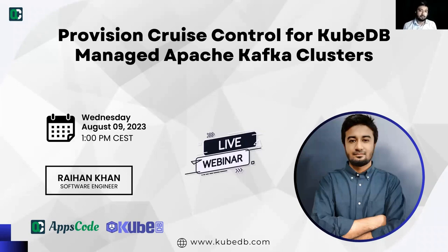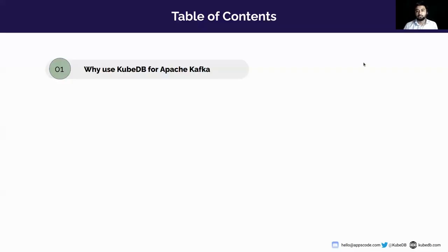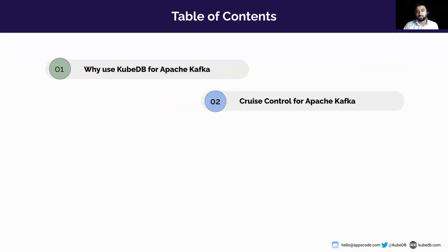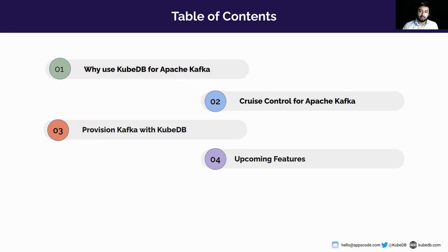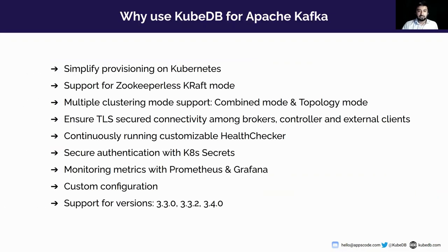In our upcoming release, we are going to add support for Cruise Control. Here's what we'll cover throughout the webinar: first, why you should use KubeDB for Apache Kafka clusters and what benefits we offer. Then we'll see how to configure and enable Cruise Control with Apache Kafka and how to provision Kafka with KubeDB. After that, we'll jump into a live demonstration, provisioning Cruise Control with an Apache Kafka cluster. Finally, we'll discuss upcoming features and wrap up with a Q&A session.